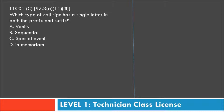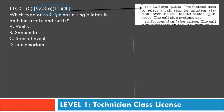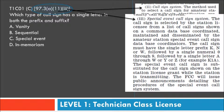The first question in this series: which type of call sign has a single letter in both the prefix and suffix? Choices are vanity, sequential, special event, or in memoriam. They reference 97.3 A11 III. Looking at section 97.311, it talks about the call sign system — the method used to select a call sign for amateur stations for over-the-air identification purposes. Jumping down to section IIII, we see the special event call sign system.